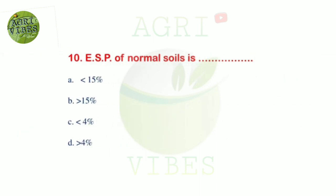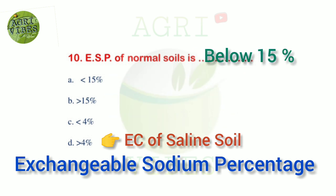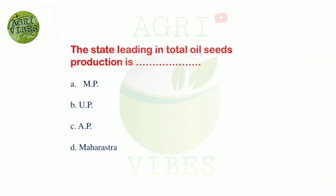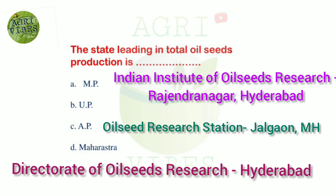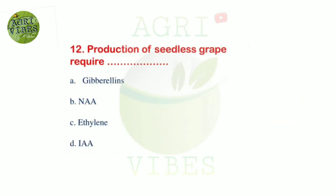Next question: ESP of normal soil is — first, ESP means exchangeable sodium percentage. Options: less than 15 percent, more than 15 percent, less than 4 percent, and more than 4 percent. Correct answer is option A, less than 15 percent. Next question: the state leading in total oilseed production is — options: MP, UP, AP, and Maharashtra. Correct answer is option A, MP — Madhya Pradesh is the leading state in total oilseed production.